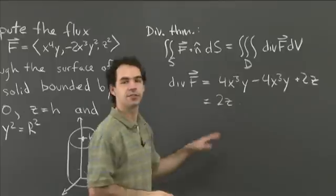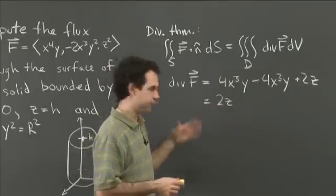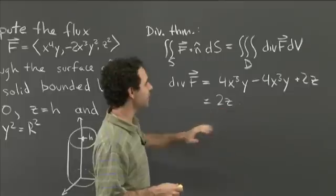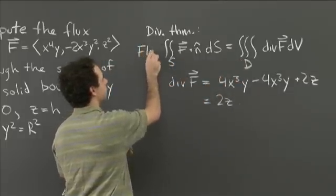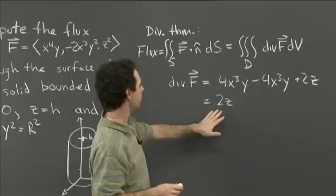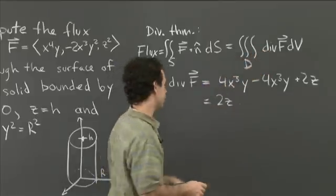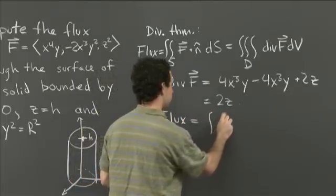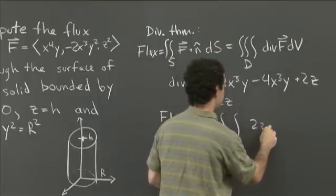The divergence is very simple compared with F — simpler than we have a right to expect, but it's nice to work with. So the flux equals the triple integral over our solid of 2z dV. Now let's write this as an iterated integral by choosing a coordinate system to integrate over this solid.